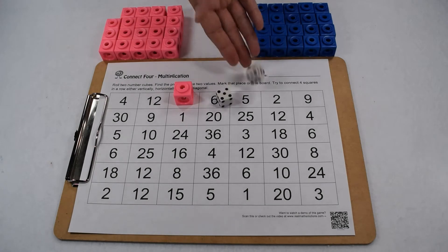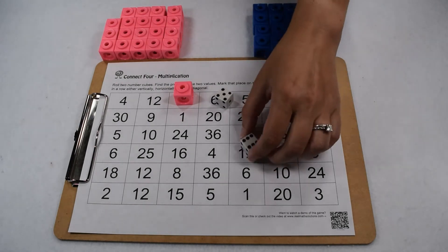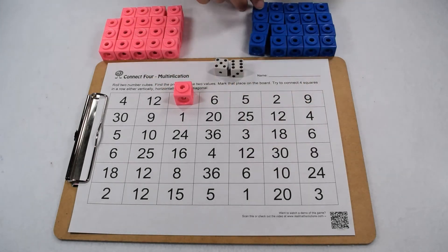Now it's our blue player, player two. They're also going to take the number cubes and roll them. They got a six and a five. Six times five is 30, so they're going to take one of their markers and put it on the 30 on the board.